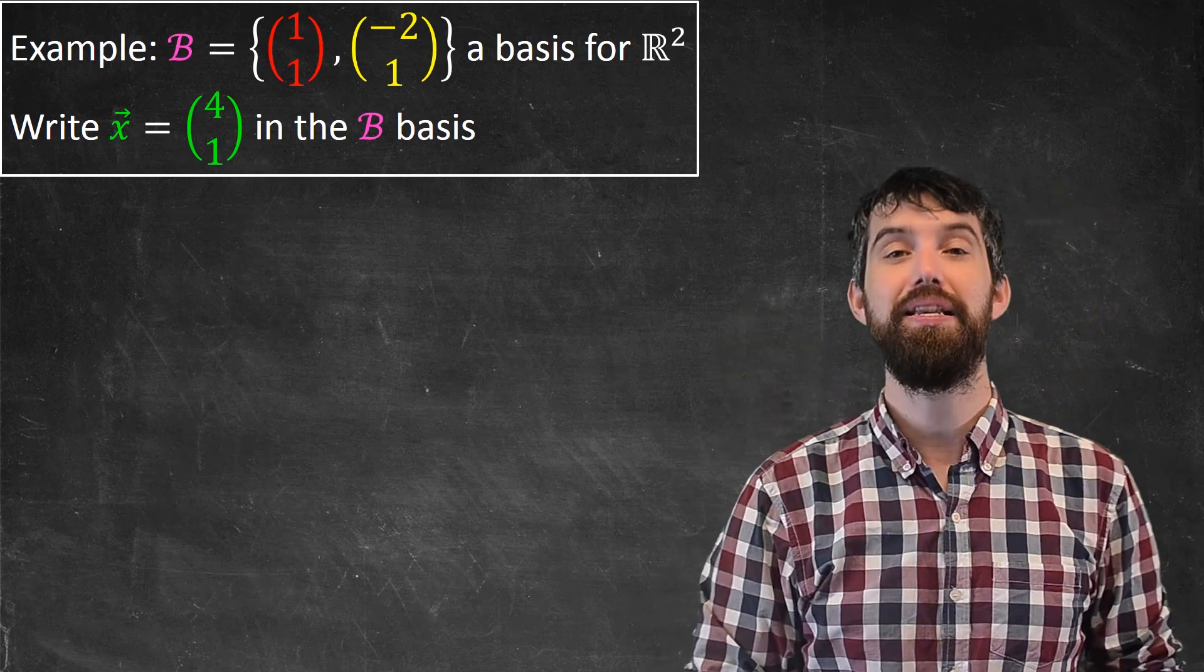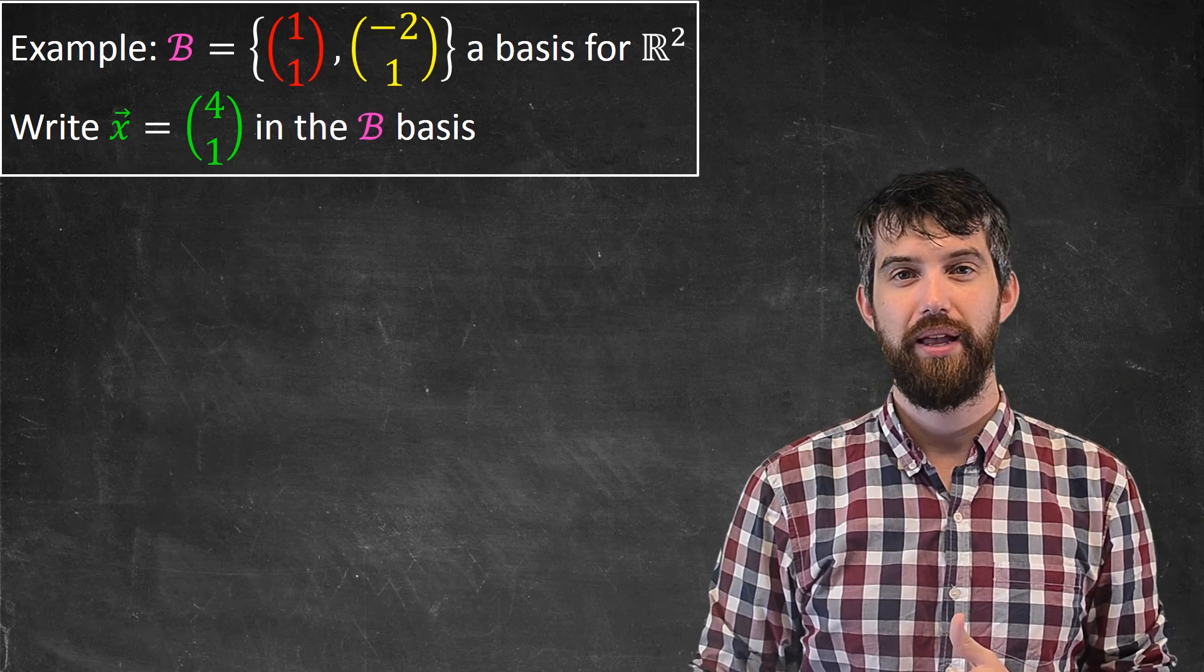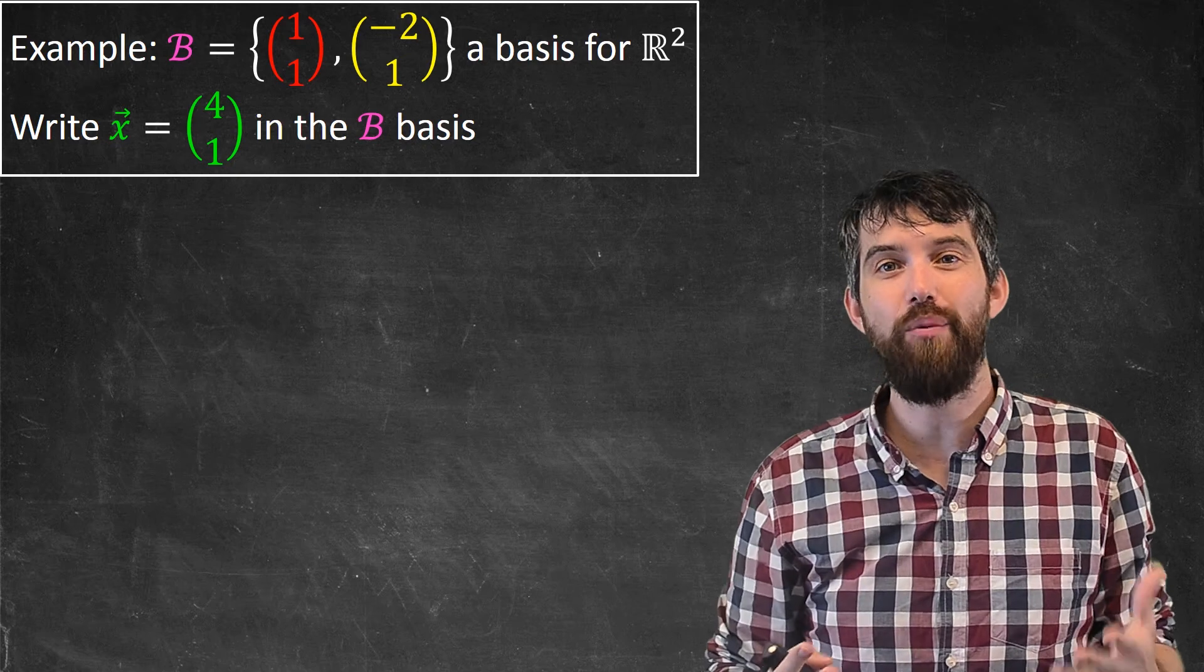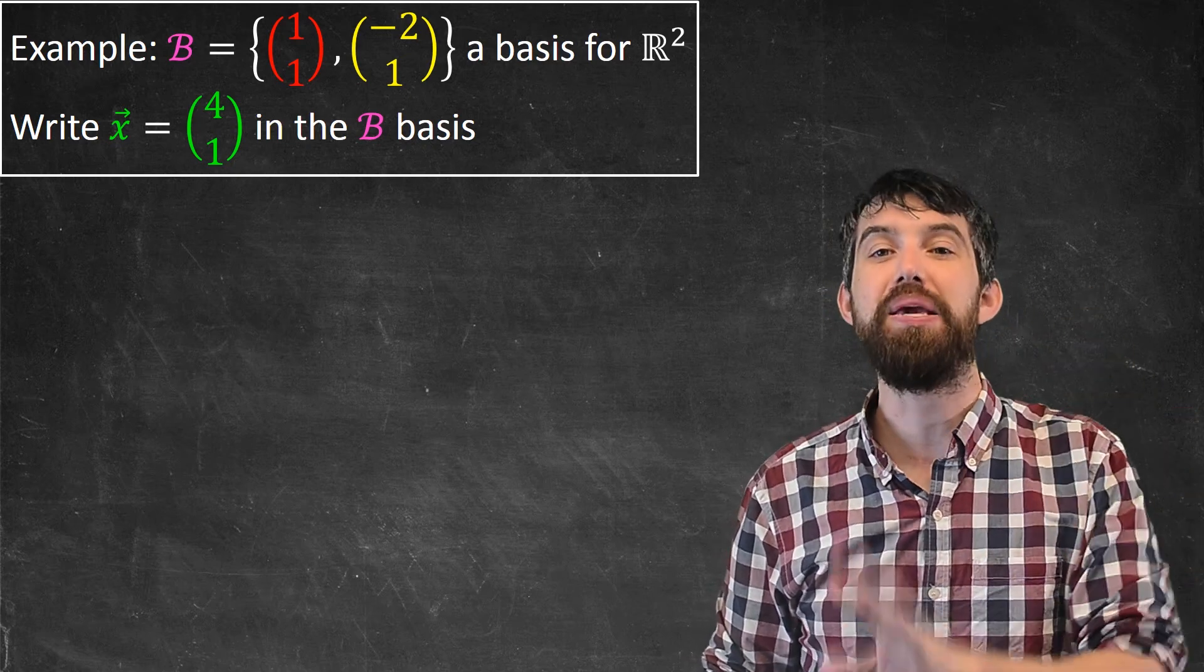I have some particular basis specified. In this case, it looks like the basis B. Then I have some vector, for example, the vector x. And what I want to know how to do is, how do I write that vector in the B basis?